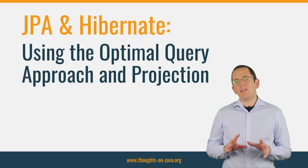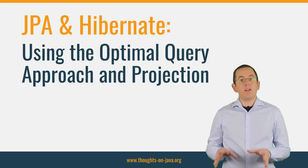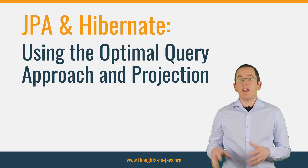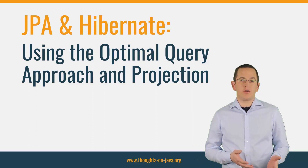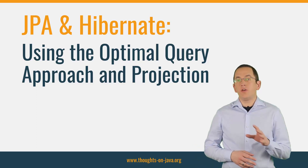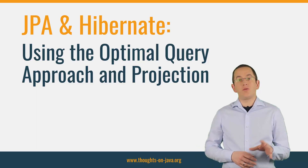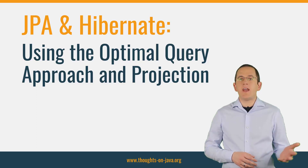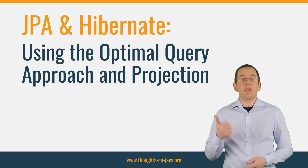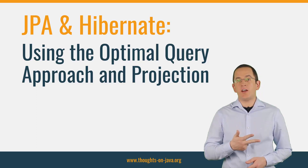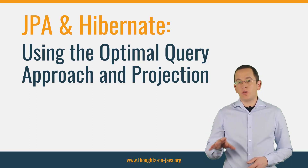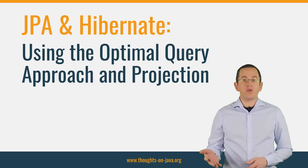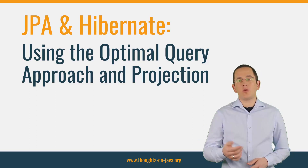OK, now let's get back to our topic. Picking the right approach to define your query is not the only thing you need to do to use JPA and Hibernate efficiently. You also need to choose the optimal projection for your use case. JPA and Hibernate enable you to select entities, DTOs, and scalar values. I will explain the differences between these kinds of projections, when to use which one, and how to define a query that returns it.